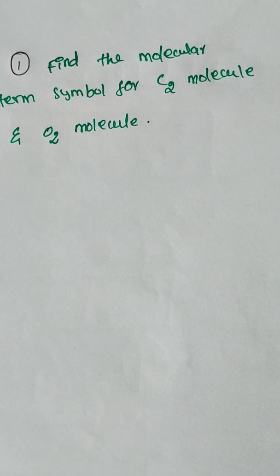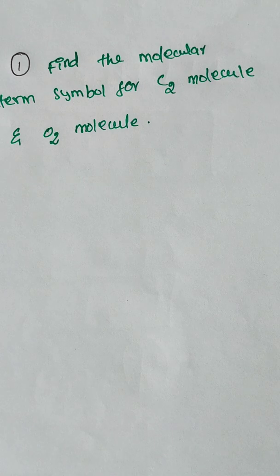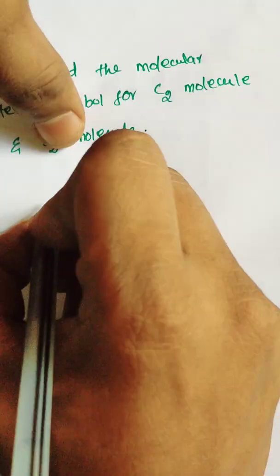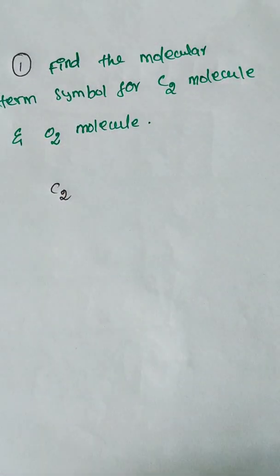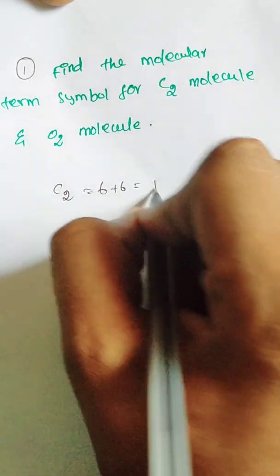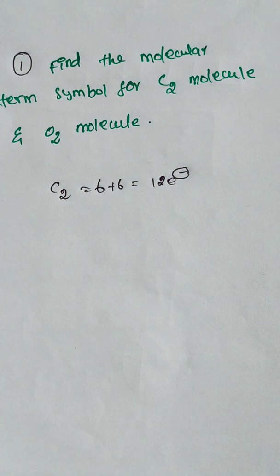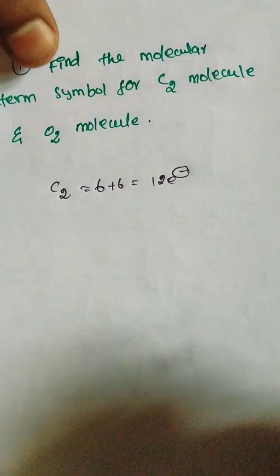Now we discuss the molecular term symbols using these rules by working through examples. The first question is to find the molecular term symbol for C2 and O2 molecules — we identify the ground state term symbol. Starting with C2: total electrons are 6 plus 6, giving 12 electrons. Since 12 is less than 14, it follows the less-than-14-electron electronic configuration.